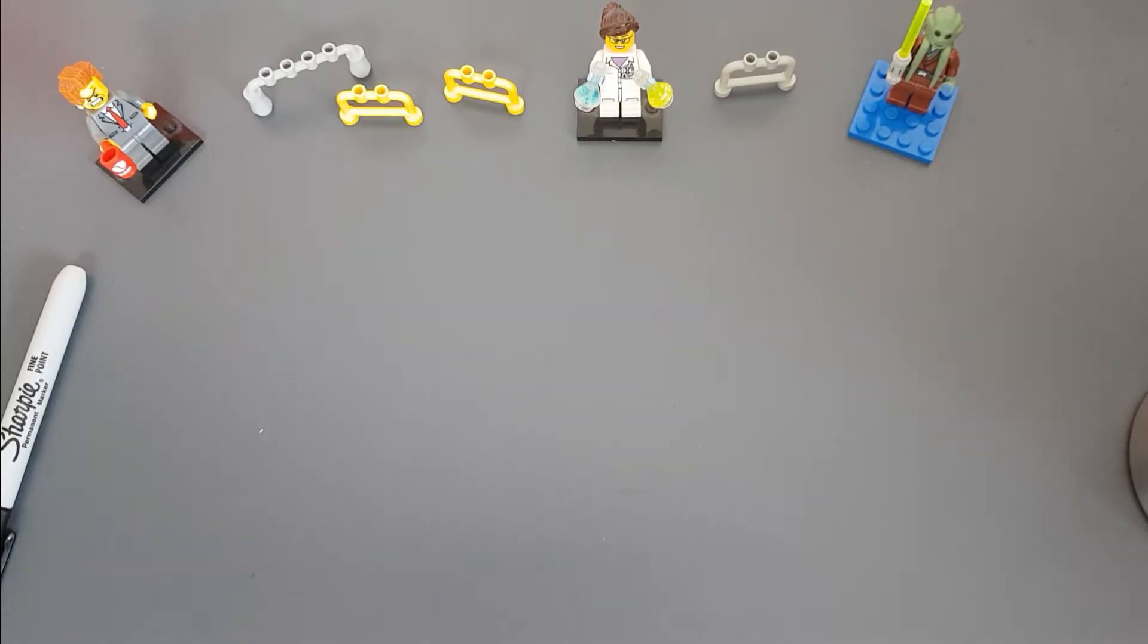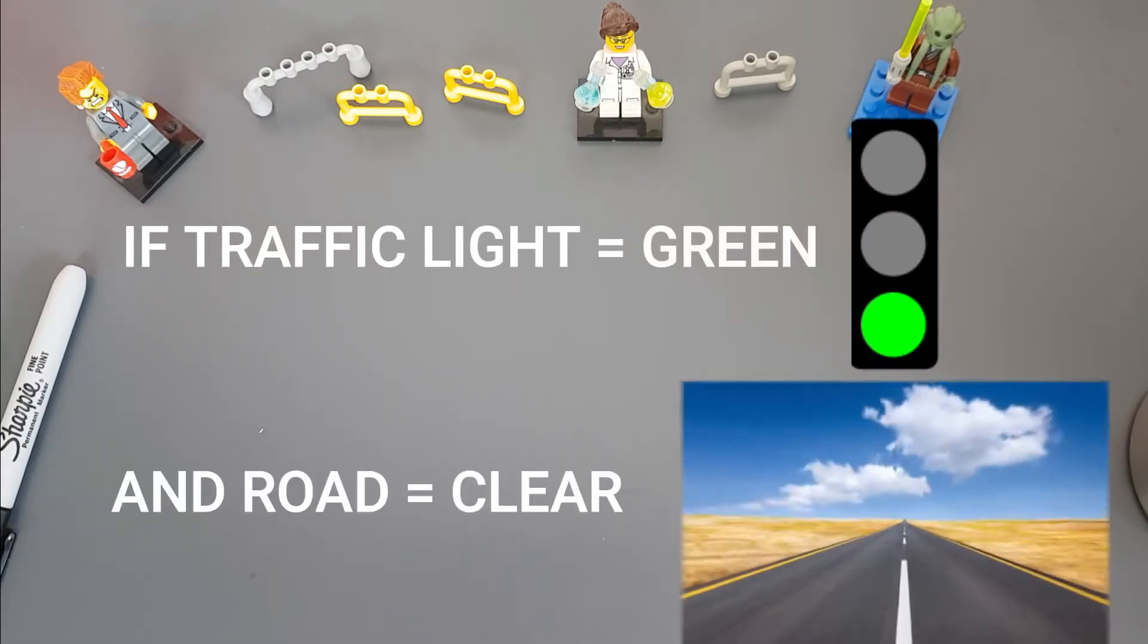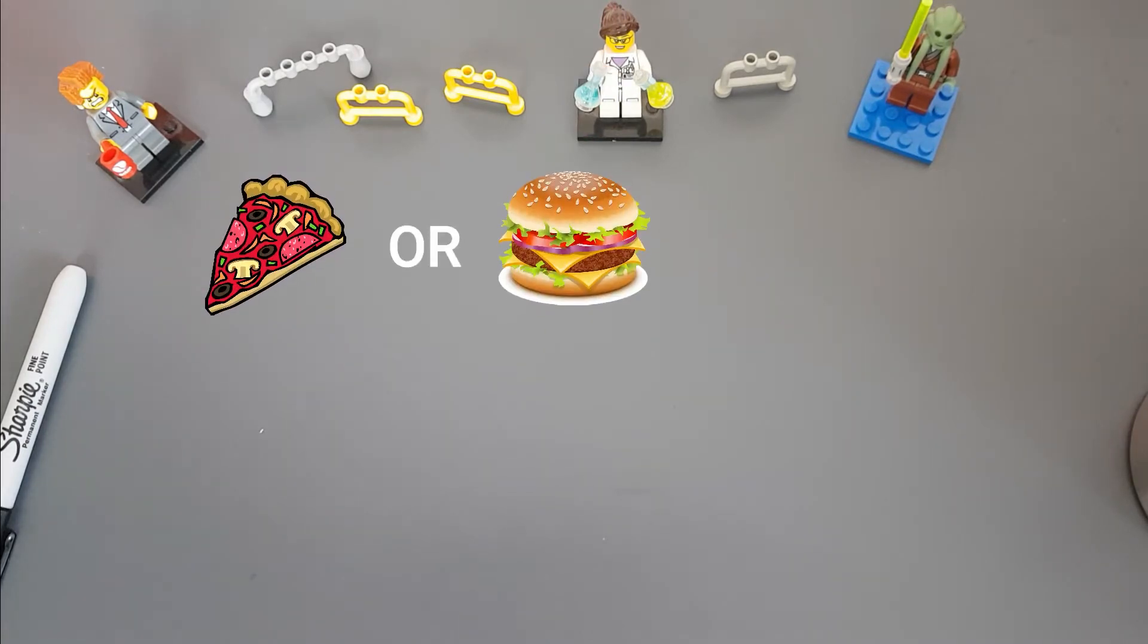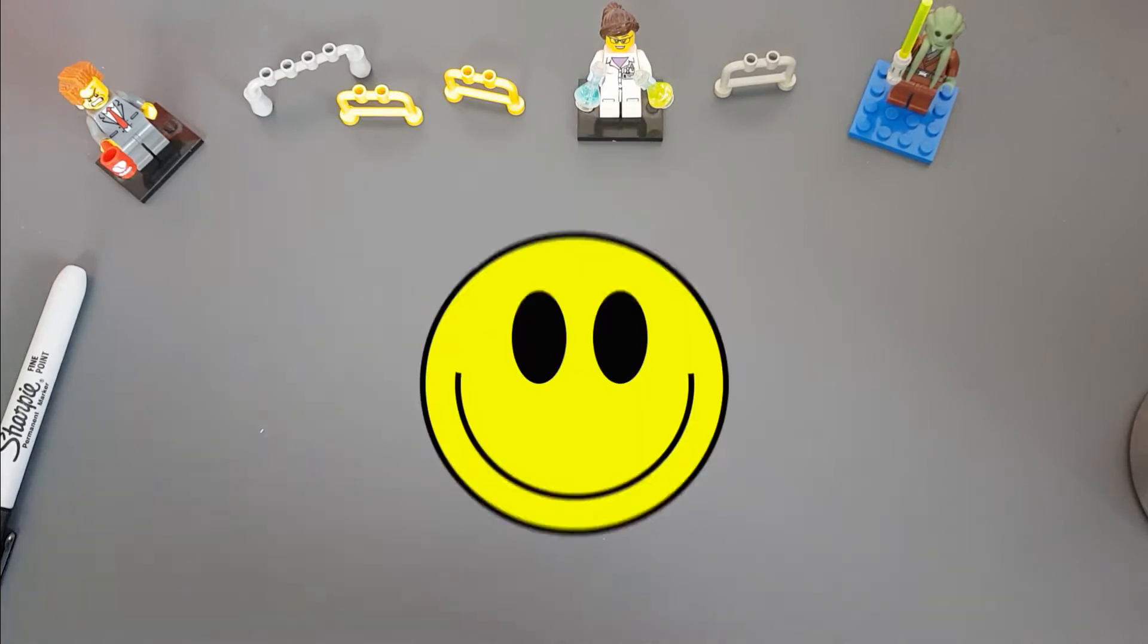And we use logical processes all the time. For example, when the traffic light is green and the road is clear and safe to drive, then you can drive. Or another example could be pizza or hamburgers, or both, will make me happy.